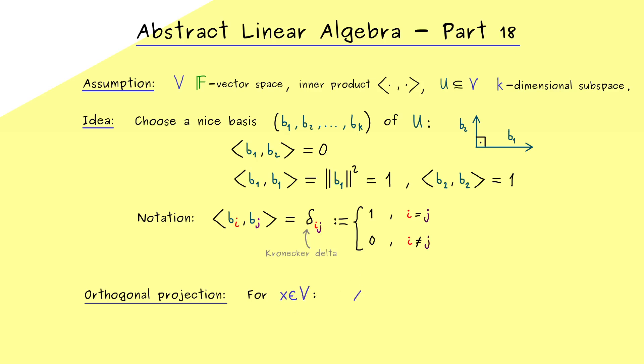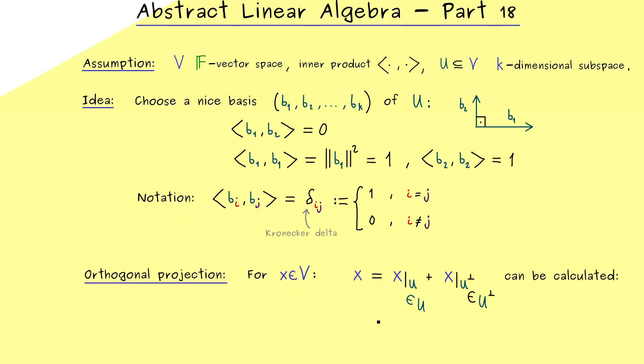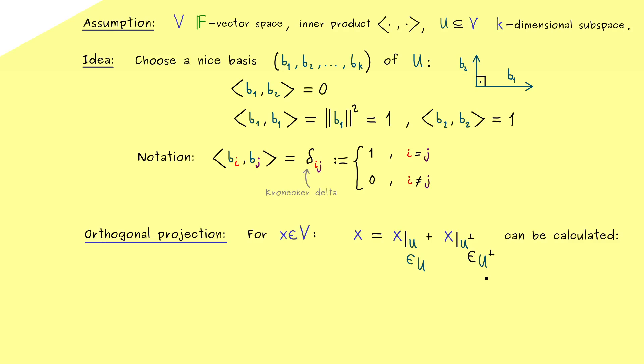This means any such x can be decomposed into two parts. The first part x_U is an element in the subspace U and the second part is perpendicular to this. Therefore we call x_U the orthogonal projection of x onto U and the other part the normal component. And we've already seen it's nice to have such a decomposition, but it might be some work to calculate it. In fact, in order to calculate it, we need the so-called Gramian matrix.